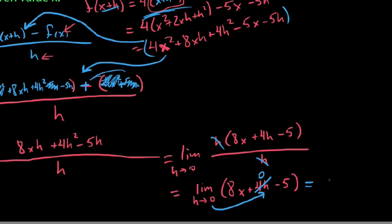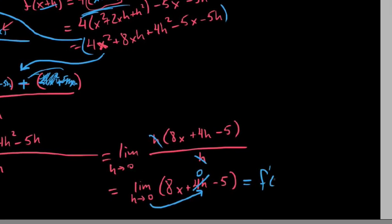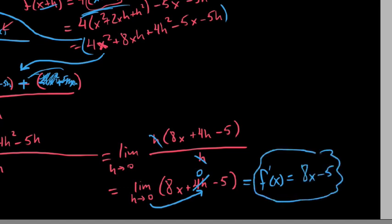This limit is equal to f prime of x, mind you, which is our derivative, and is also equal to 8x minus 5. So, hey, this function right here, stick it in your pocket, is so awesome. Guess what it does for us? It lets us know the slope of the graph at any given x value.